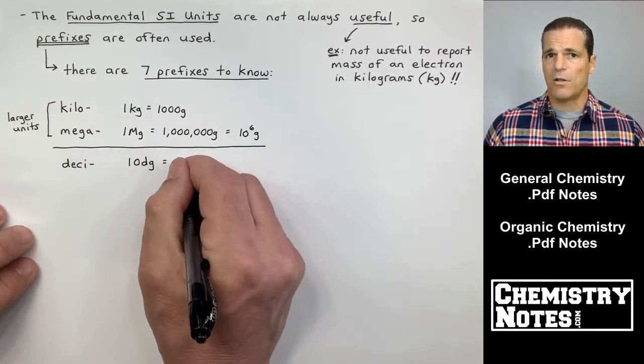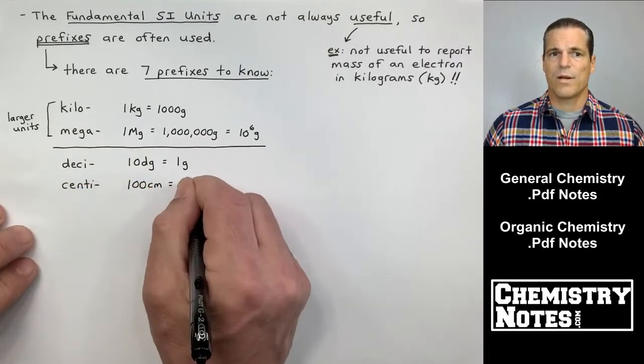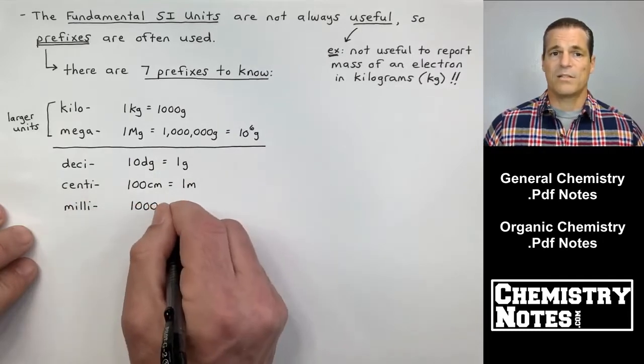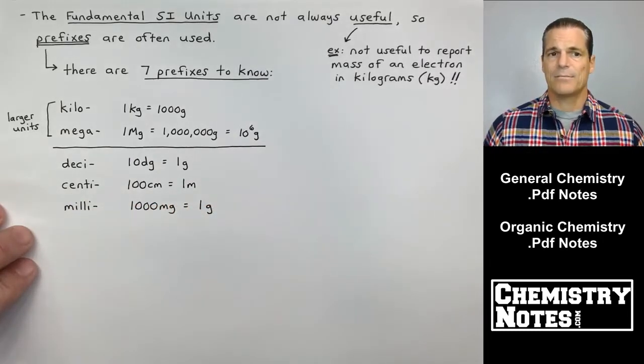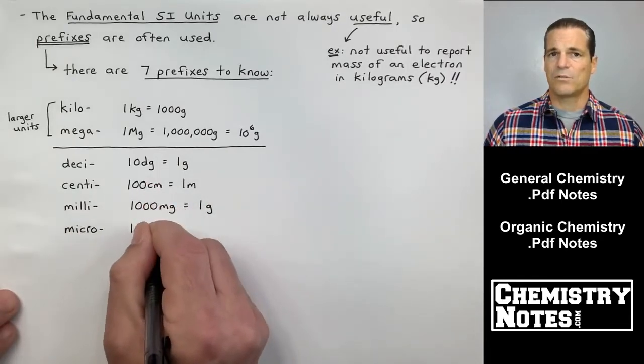Now, some of the smaller units are deci. Desi's 10, 10 desigrams is one gram. Centi, as an example, 100 centimeters is a meter. Millie is a thousand. As an example, 1000 milligrams is equal to one gram.